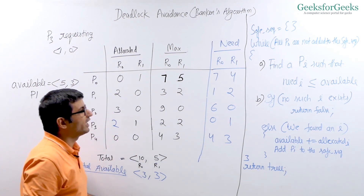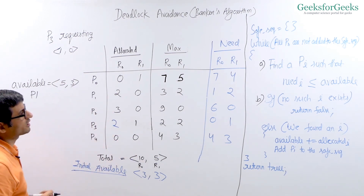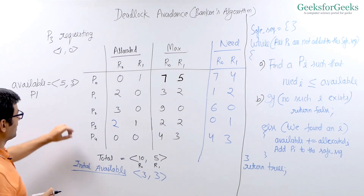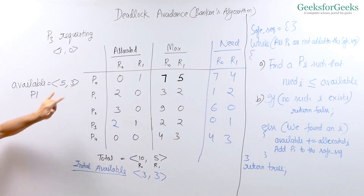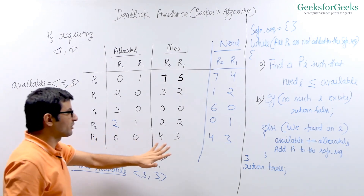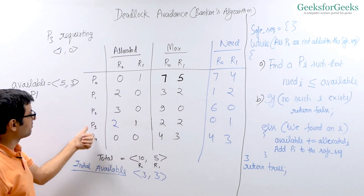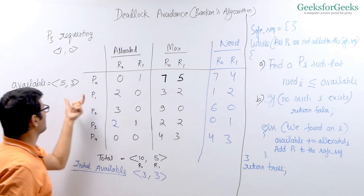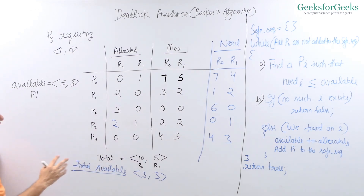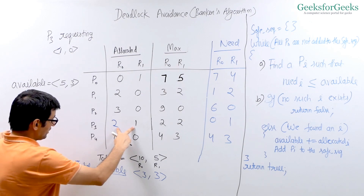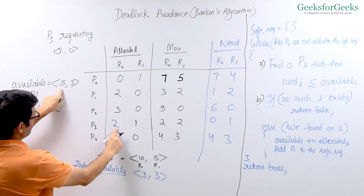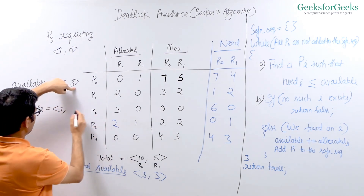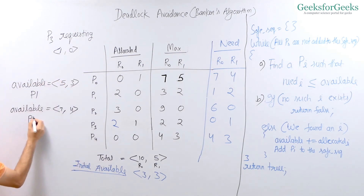We again iterate through the loop to find a process whose need is smaller than available. P2's need is (6, 0) and available is (5, 3) — P2 is not such a process. We continue searching and find P3: its need is (0, 1) and available is (5, 3) — yes, P3 satisfies the criteria. So we add P3's allocated (2, 1) to available, getting (5+2, 3+1) = (7, 4). Our safe sequence is now P1, P3.